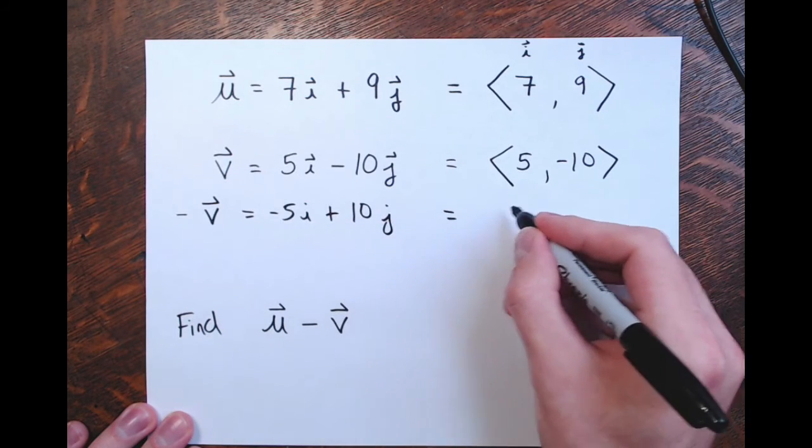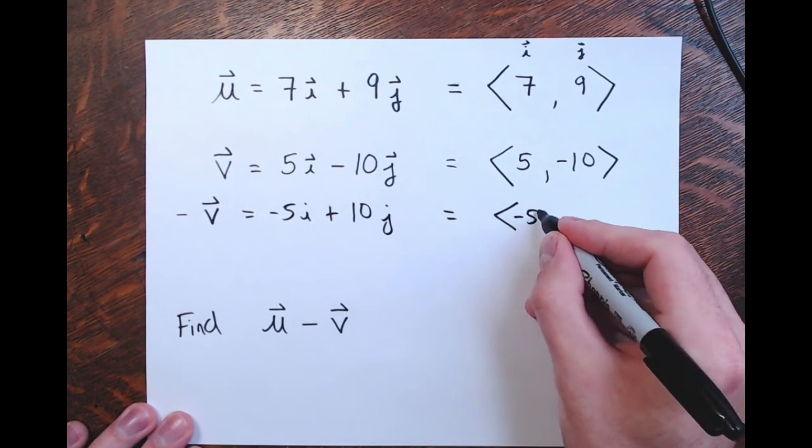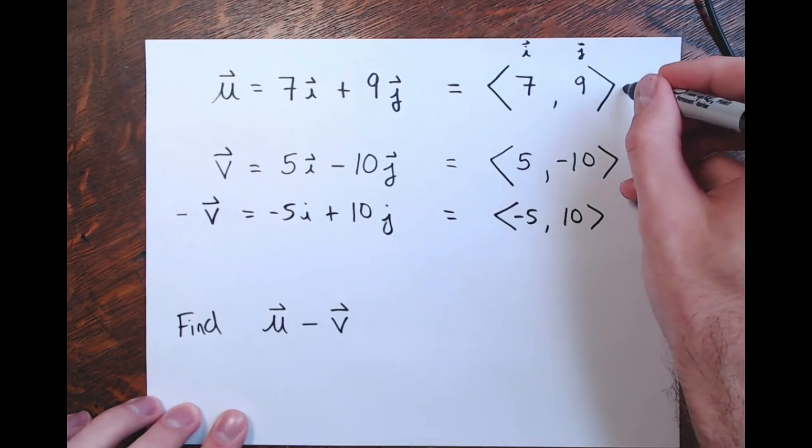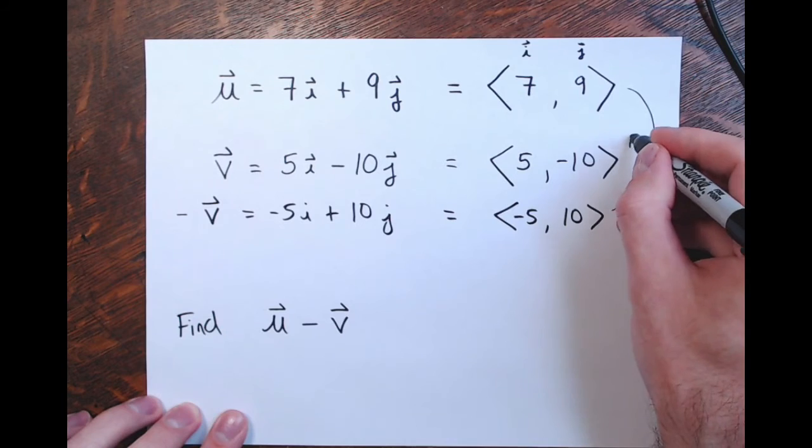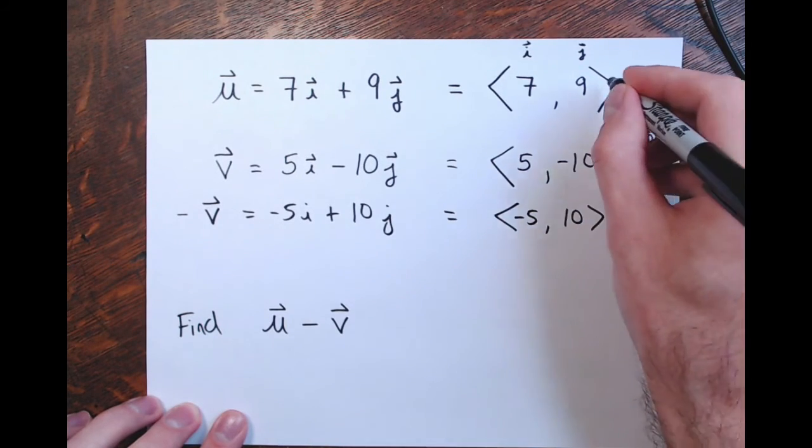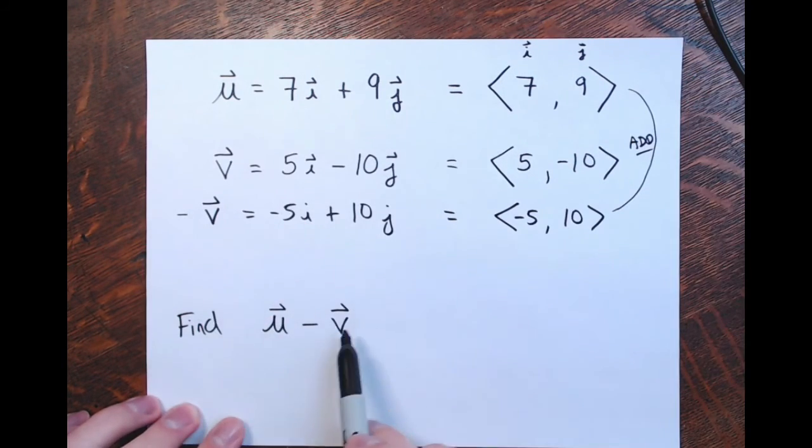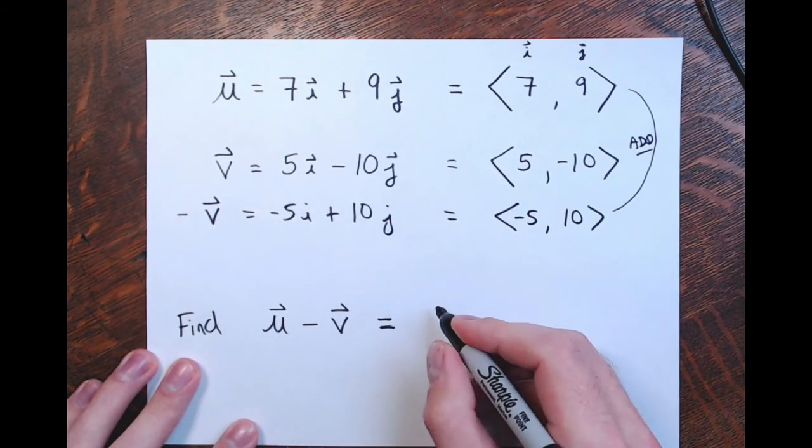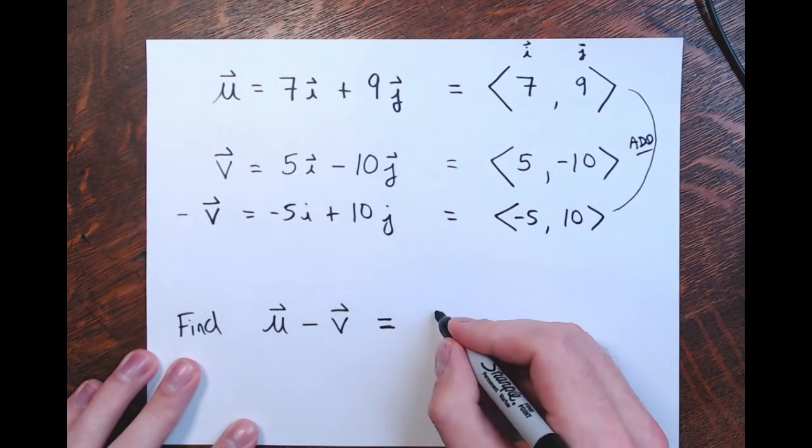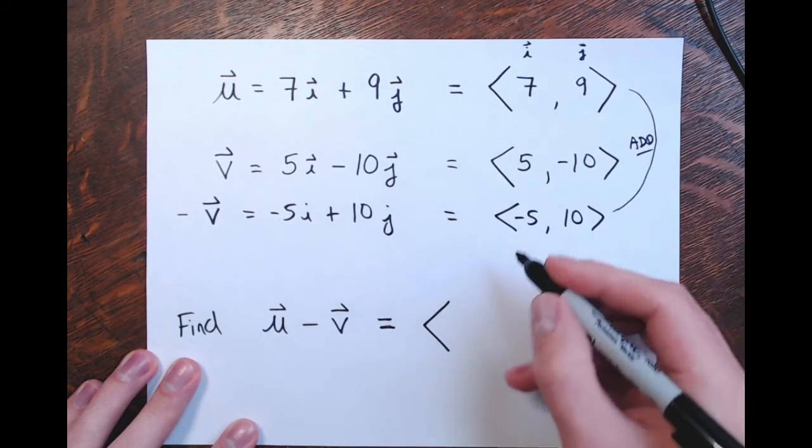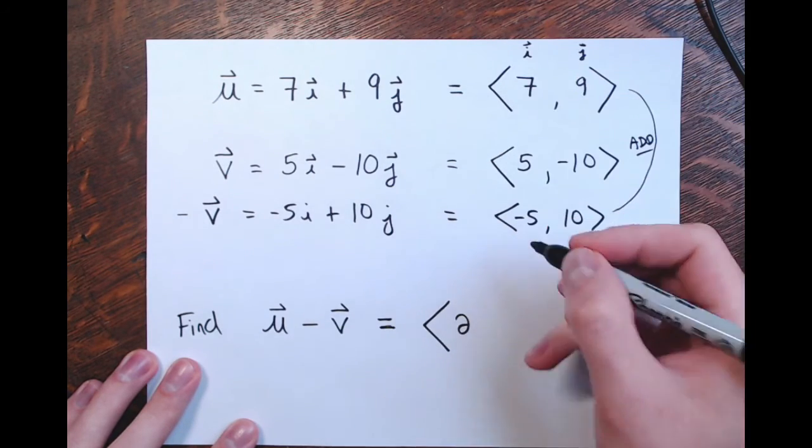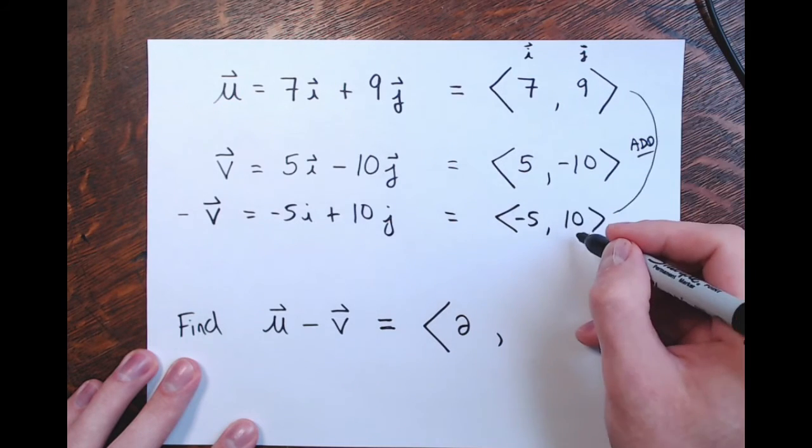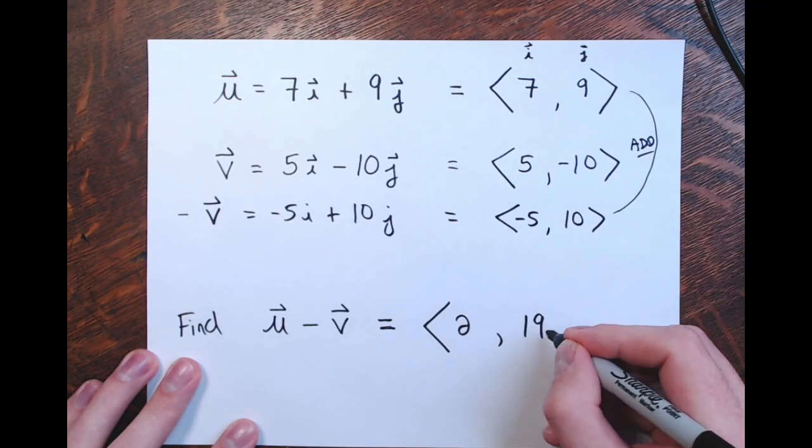Or if you want, in the components here, that'd be negative 5 for the first component, positive 10 for the second. Then I'm adding these—we're adding u and minus v to get u minus v. Or you could just take u and v here and subtract the components. 7 minus 5 is 2, 9 minus negative 10 or 9 plus 10 is 19.